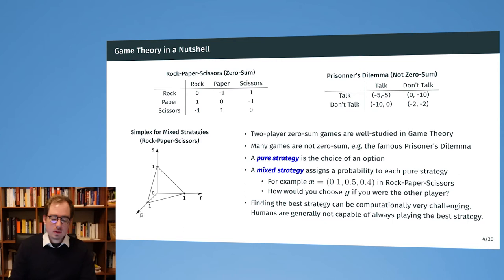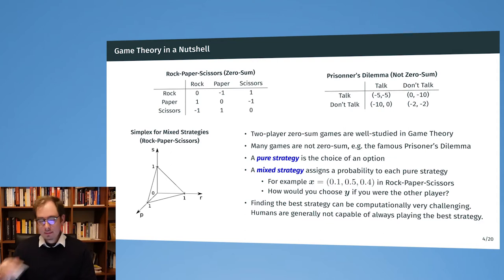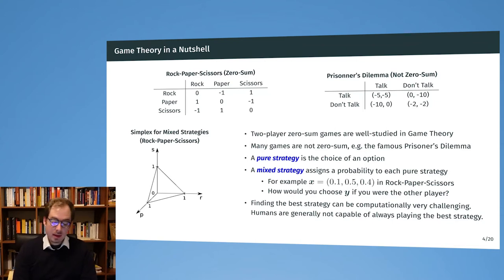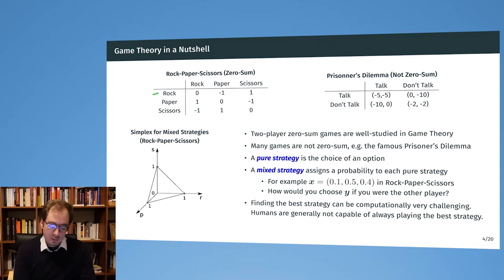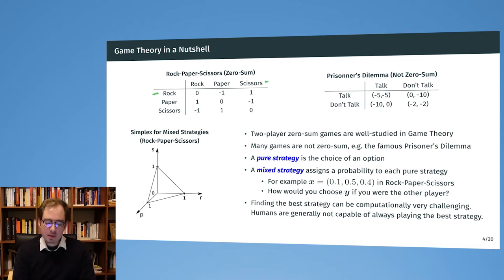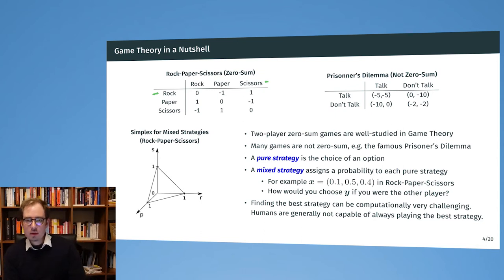Let's see a couple of game theory examples. The first game is rock-paper-scissors: two players play against one another and depending on whether they choose rock, paper, or scissors, the first player either wins and gets a +1 or loses and gets a -1. For example, if the first player chooses rock and the second chooses scissors, the first player wins (+1); if the first chooses rock and the other chooses paper, the first player loses (-1). This is a zero-sum game because every gain of the first player is the loss of the second.